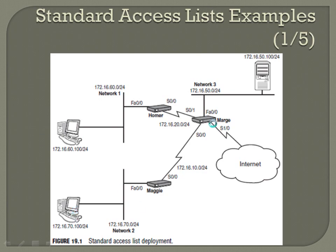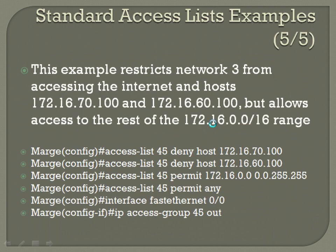We'll start off with our specific deny statements for 172.16.70.100 and 172.16.60.100 like we used in the last example — those are both the same. Then we want to set up a permit statement that allows access to the rest of the 172.16.0.0 range.